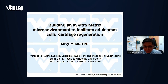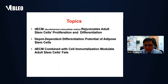It's my honor to give a talk today about our studies. The title is 'Building an In Vitro Matrix Microenvironment to Facilitate Adoral Stem Cells Cartilage Regeneration.' Today I would like to talk about two sections. The first one is decellularized extracellular matrix rejuvenating adult stem cell proliferation and differentiation. These sections serve as a foundation for today's talk. The second and third are two recent studies we just finished, and the data from these two studies can support the first sections.